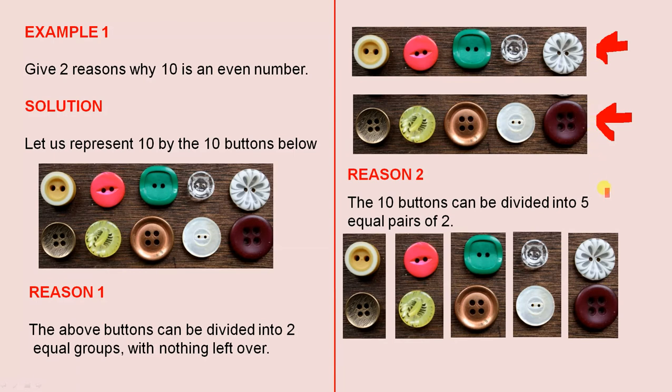The second reason is this. The ten buttons can be divided into five equal pairs of two. One pair, two pairs, three pairs, four pairs, five pairs and there are no leftovers. Nothing is left over. So there's the second reason why ten is an even number.